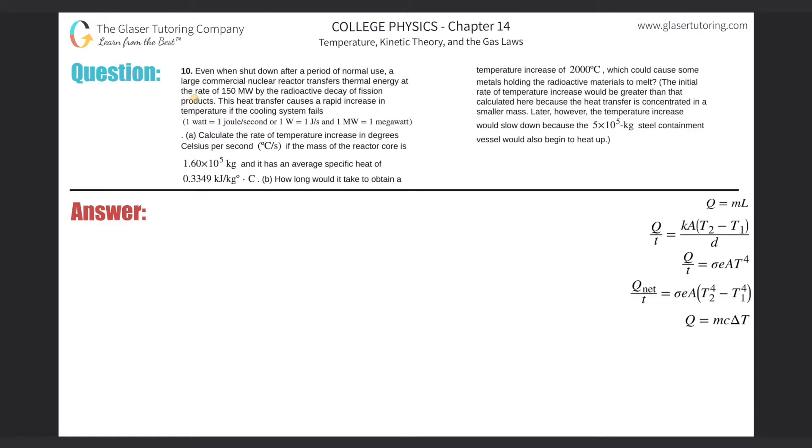Number 10. Even when shut down after a period of normal use, a large commercial nuclear reactor transfers thermal energy at a rate of 150 megawatts by the radioactive decay of fission products. This heat transfer causes a rapid increase in temperature if the cooling system fails. Chernobyl, anyone?